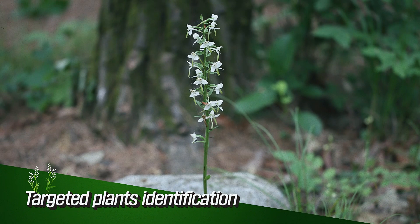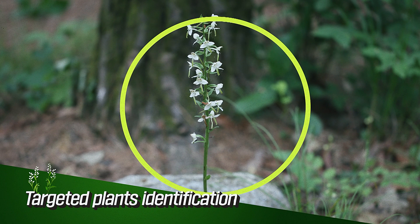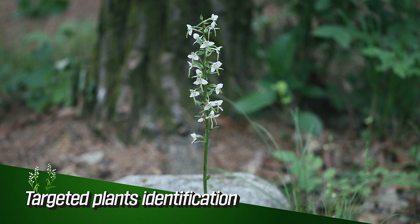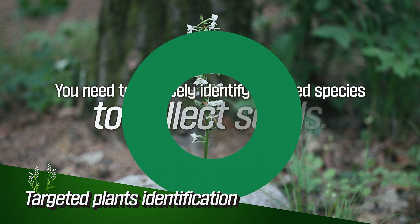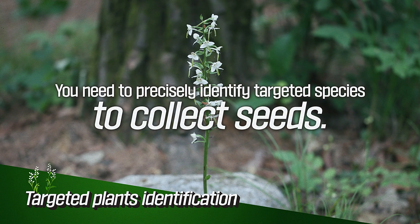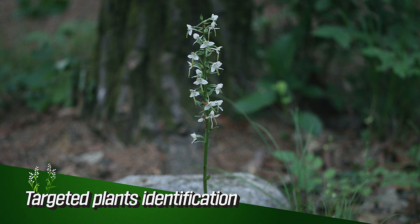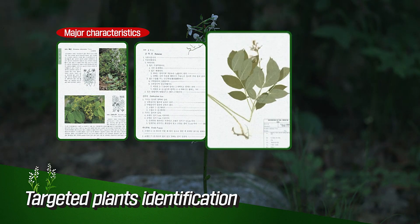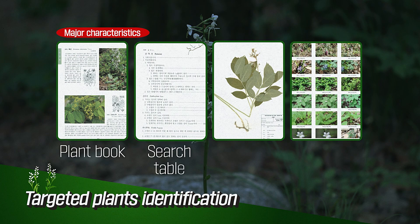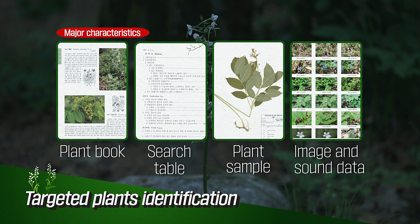Targeted plants identification. You need to precisely identify targeted species to collect seeds. You should fully understand in advance the main characteristics to categorize targeted species using a plant book, search table, plant sample, and image and sound data.